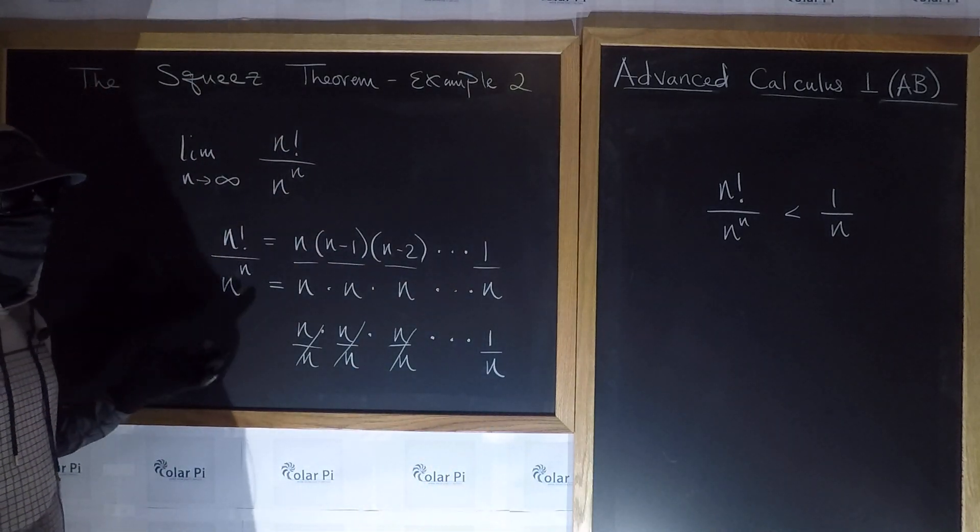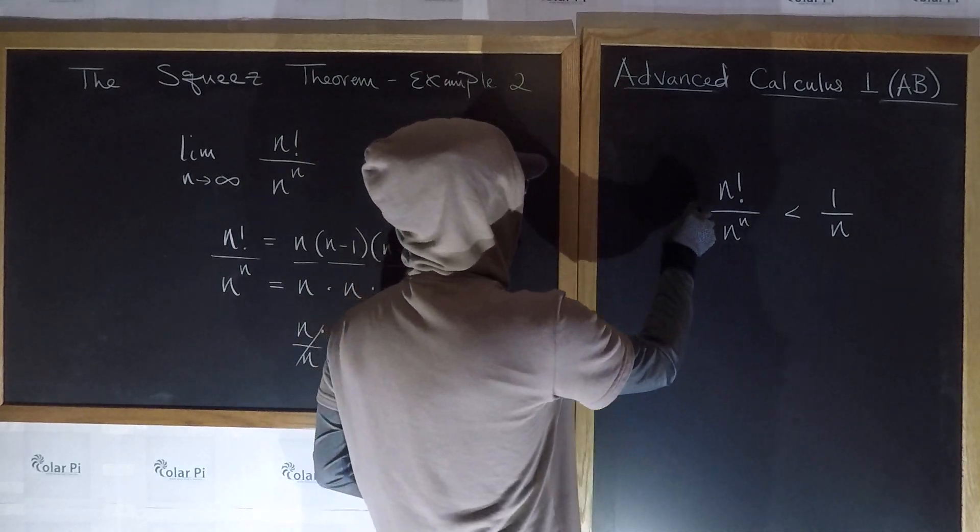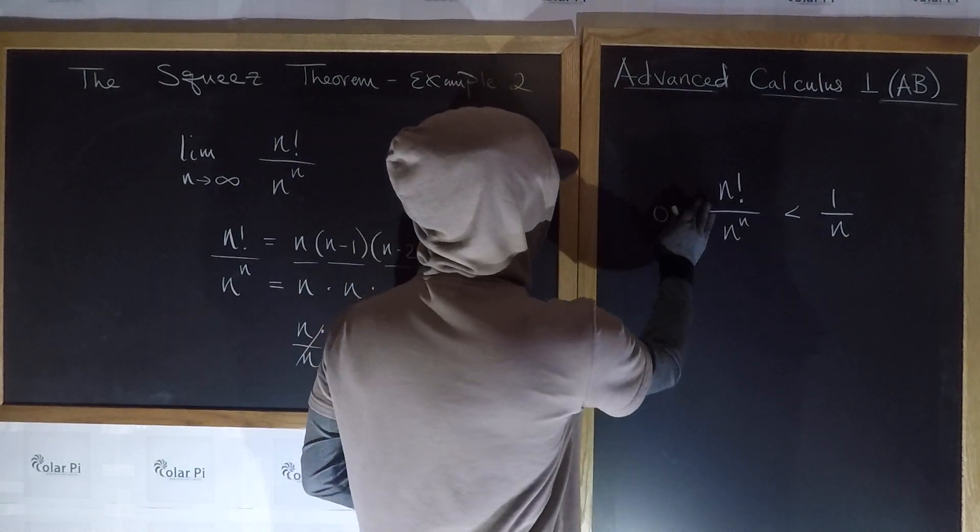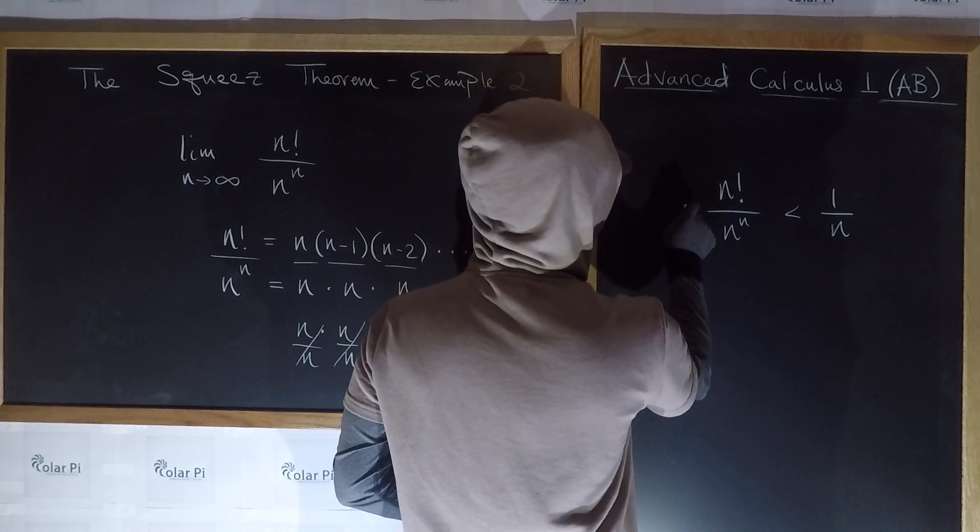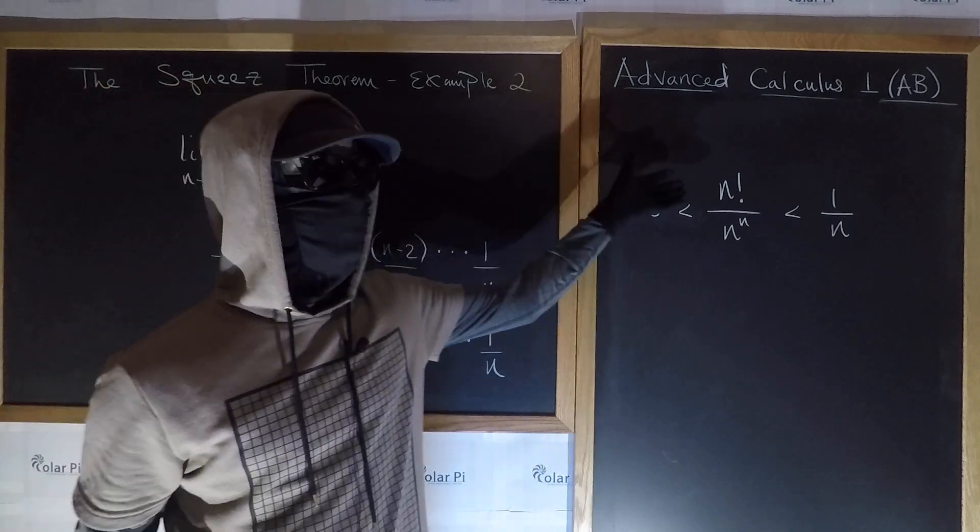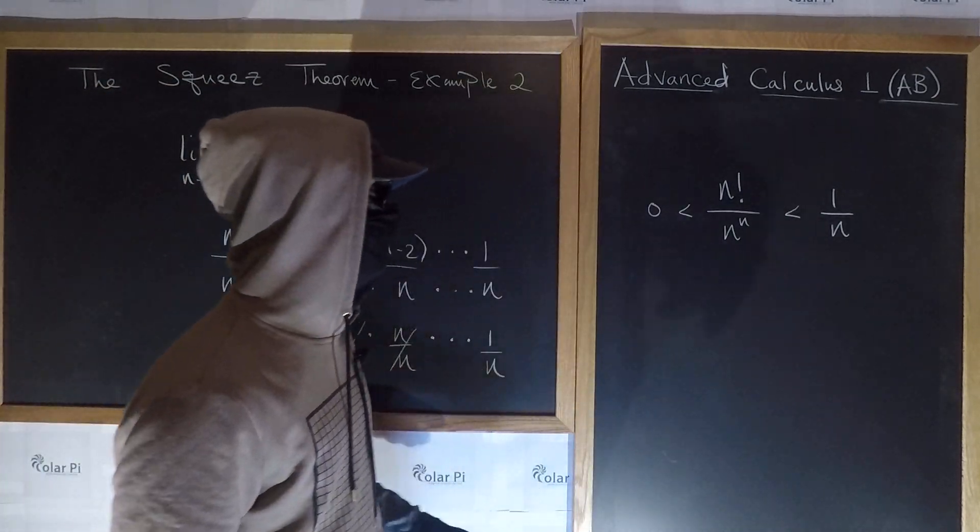Based on what I just showed. And of course, n factorial divided by n to the n is bigger than 0. So, 0 is less than it. 0 is less than n factorial divided by n to the n, which in turn is less than 1 over n. Okay, so we want to use the squeeze theorem.